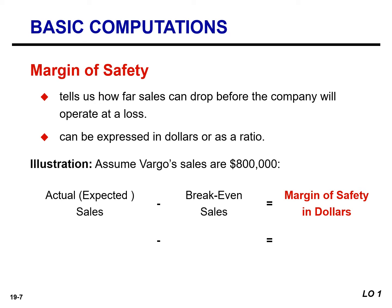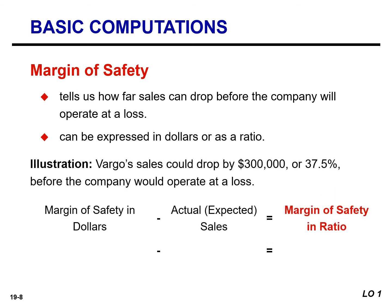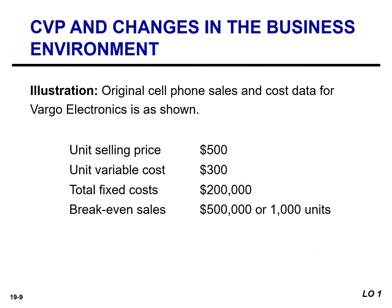Another measure managers use to assess profitability is the margin of safety. The margin of safety tells us how far sales can drop before the company will be operating at a loss. Managers like to have a sense of how much cushion they have between their current situation and operating at a loss. This can be expressed as a dollar amount or as a ratio. For example, Vargo reported sales of $800,000. At that level of sales, its margin of safety is $300,000, so Vargo's sales could drop by $300,000 before the company would operate at a loss. We can also calculate the margin of safety as a ratio by dividing the margin of safety in dollars by the expected or actual sales — in this instance, 37.5%.